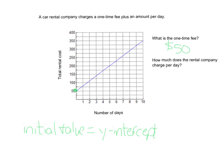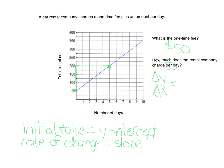How much does the rental company charge per day? The rate of change from a graph is the slope. We look at the graph and find a clear point. We draw our triangle and calculate change in y over change in x. From 50 to 200, the change in y is 150. The change in x goes from 0 to 5. So 150 divided by 5 gives us $30 per day.